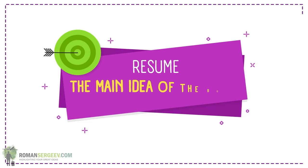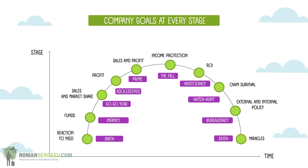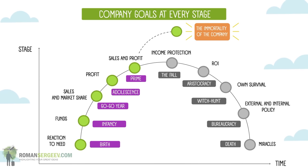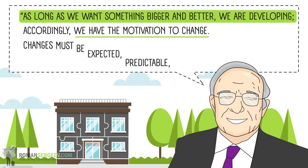In summary, an organization, much like a living being, goes through several stages: it is born, matures, lives its golden years, and then can grow old and die. But this does not have to happen if the company is well managed, accepts changes, and does not let abnormal problems grow. Any business can be at its peak for an infinitely long time. As long as we want something bigger and better, we develop accordingly. Changes must be expected, predictable, planned, and continuously tested.